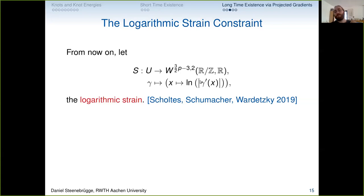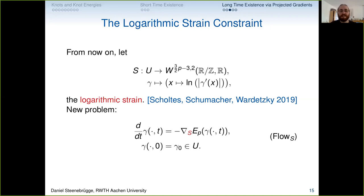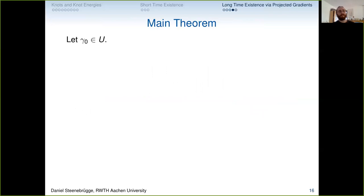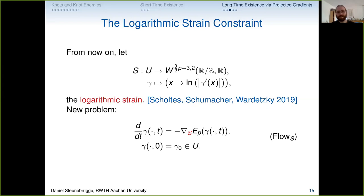The modified flow is then: ∂_t γ = −∇_S E_p(γ), with the logarithmic strain constraint S, and initial curve a sensible arc-length-parametrized curve. To complete the proof, we need to verify all bounds — on the differential, its inverse, and the Lipschitz constant — for this constraint. It turns out this is all manageable, taking a few pages of calculations, largely building on the paper by Scholtes–Schumacher–Wardetzky. Everything boils down to dependence on the Lipschitz constant and the Gagliardo seminorm, which we know how to control via the energy when the parametrization is nice.